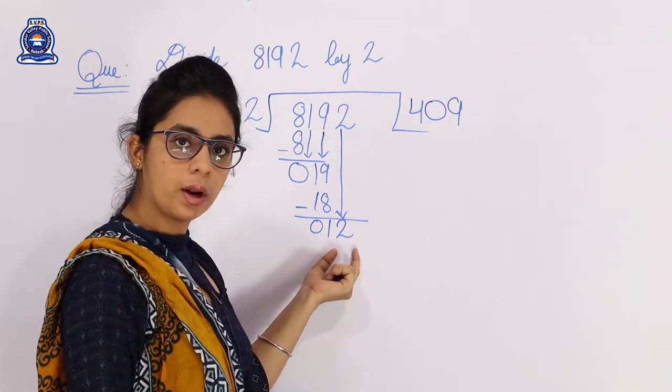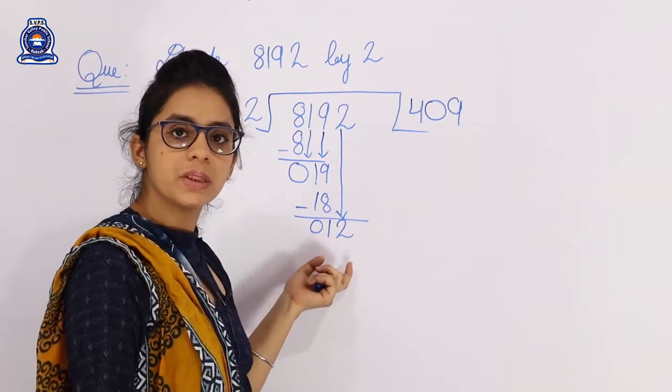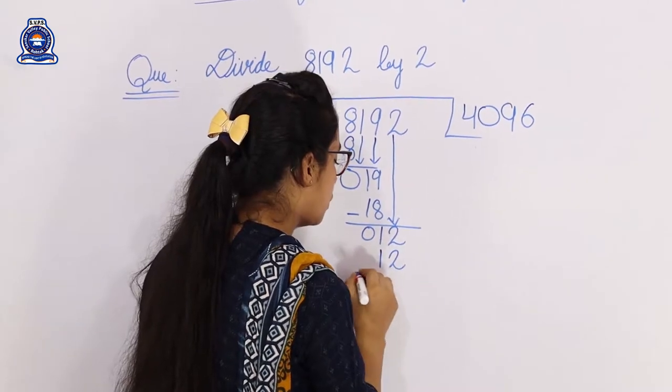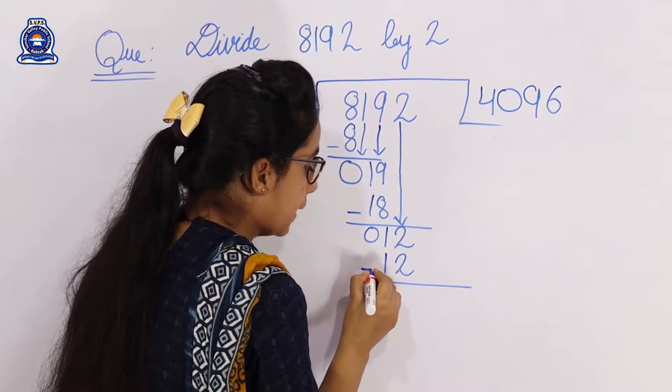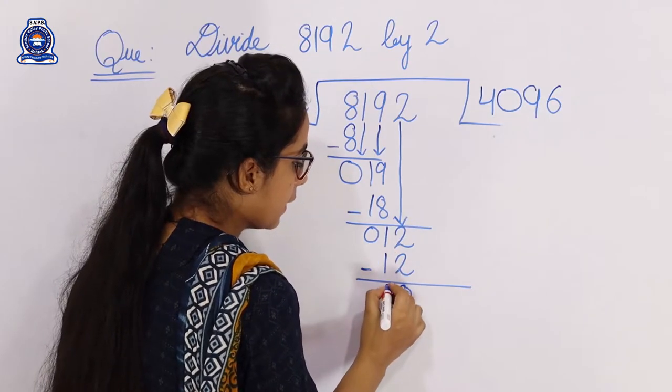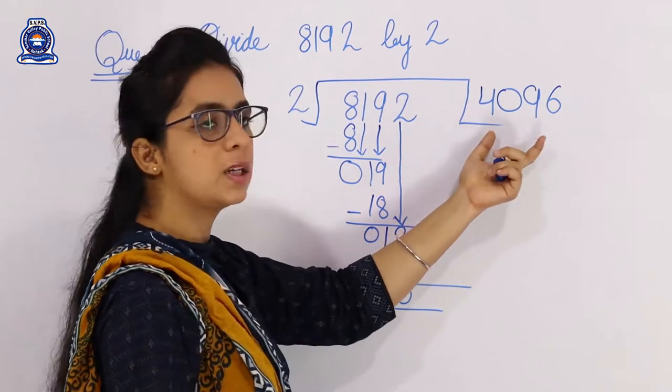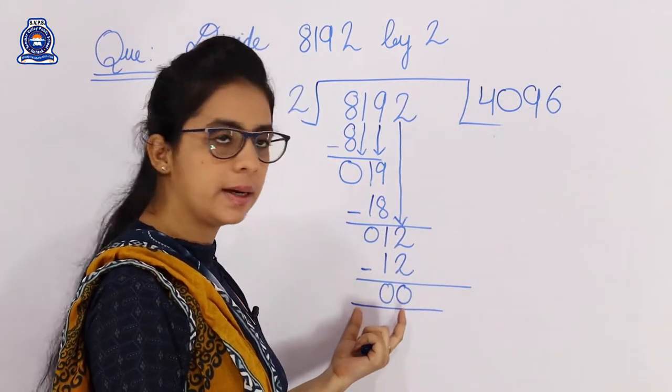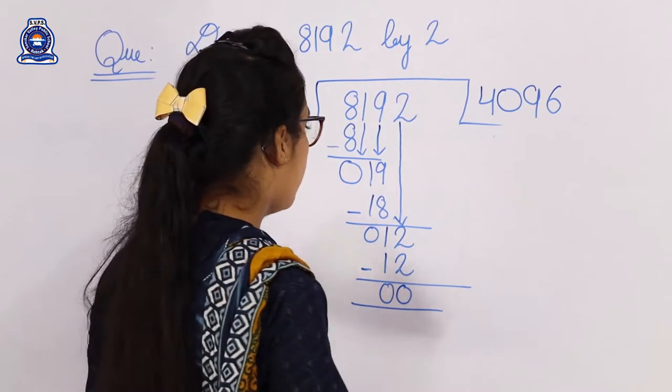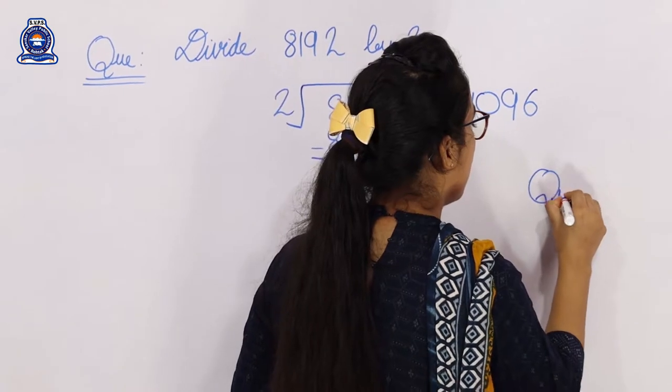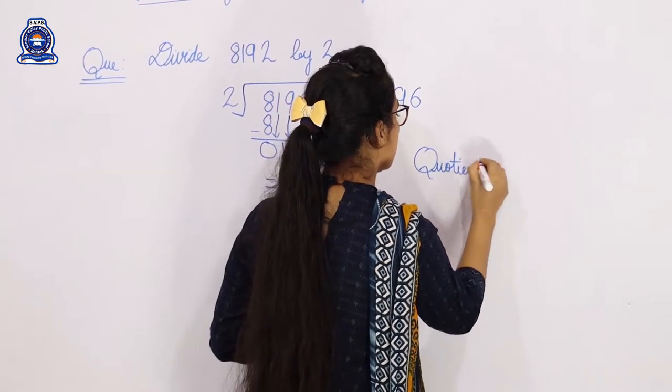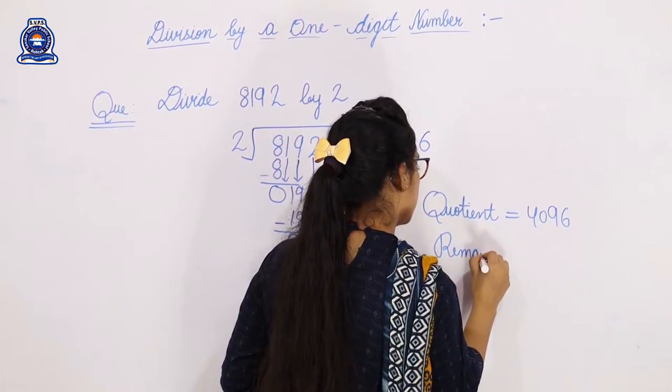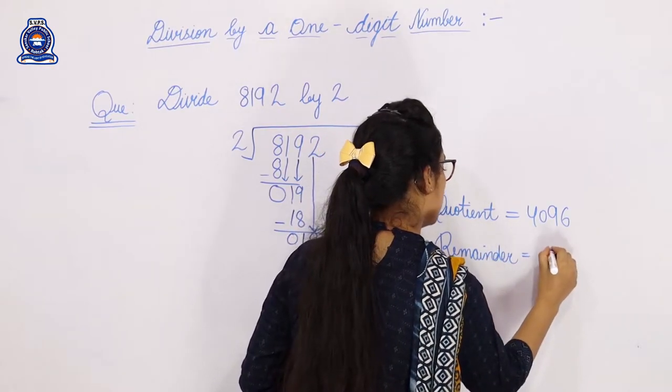Now we carry 2 again. 12 divided by 2: 2 sixes are 12. We write 6 here. Then we subtract 2 minus 2 equals 0, 1 minus 1 equals 0. So our quotient is 4096 and our remainder is 0. After the division, we write that our quotient equals 4096 and our remainder equals 0.